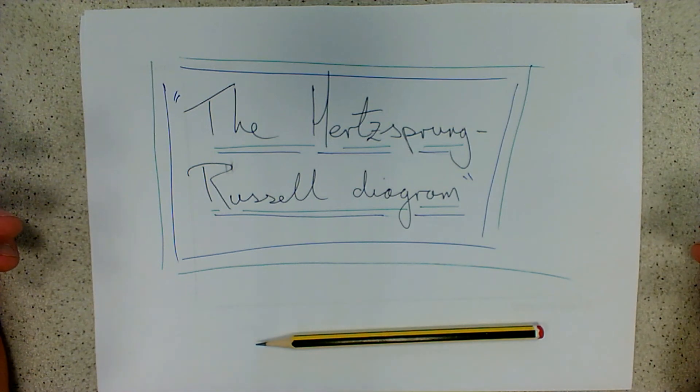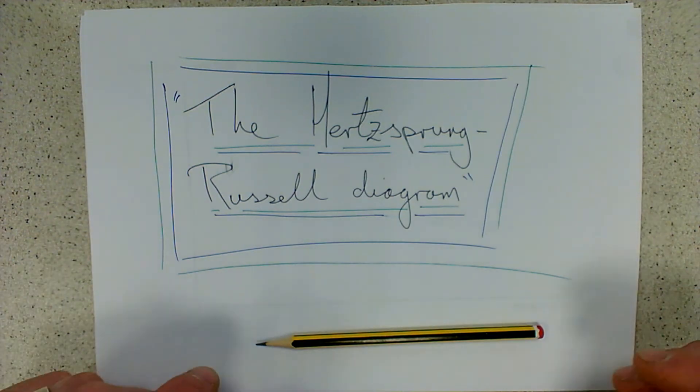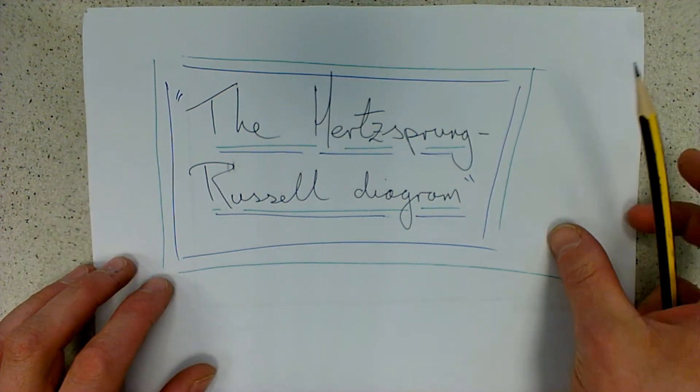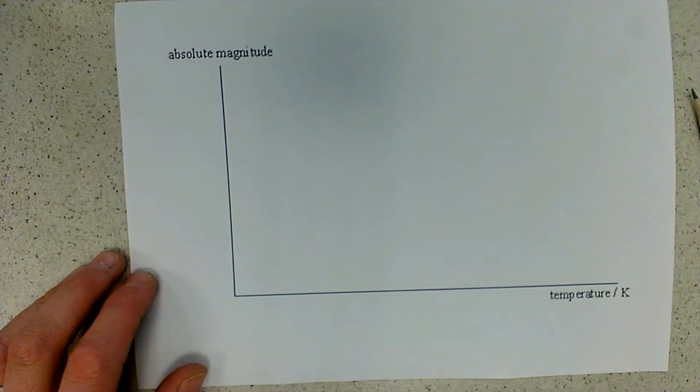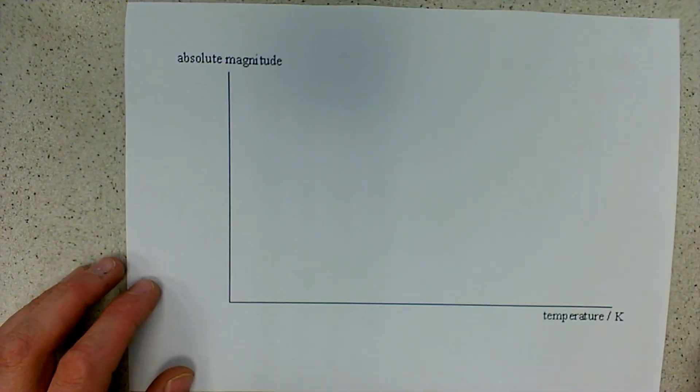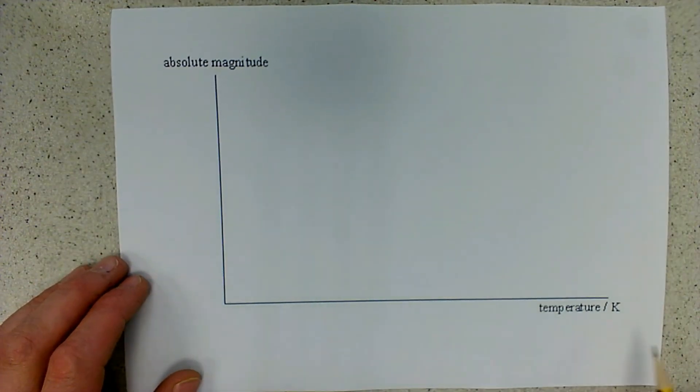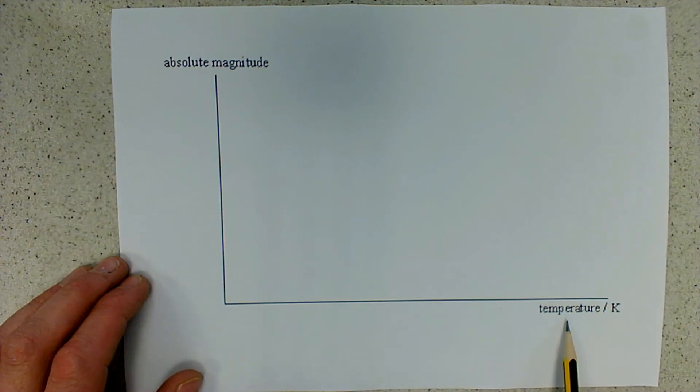Once you've drawn it you may be expected to mark on different stars such as the Sun or stars which you may be expected to compare to the Sun. In an exam typically you'll be given an empty set of axes which will either be marked with temperature or maybe marked with spectral class.